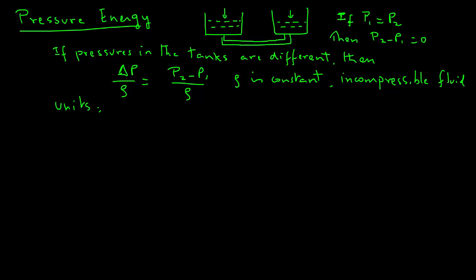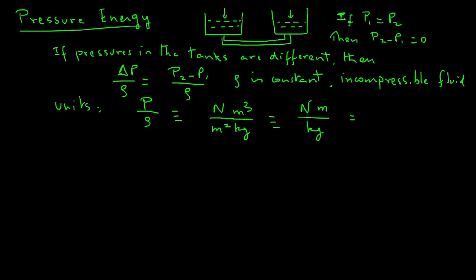Let's check the units of the pressure energy term. Pressure has units of force per unit area: newtons per square meter. Dividing by density in kilograms per cubic meter, one meter cancels, leaving newton-meter over kilograms. Newton times meter is work, with units of joules. So the numerator is joules and the denominator is kilograms, giving us units of joules per kilogram for the pressure energy term.